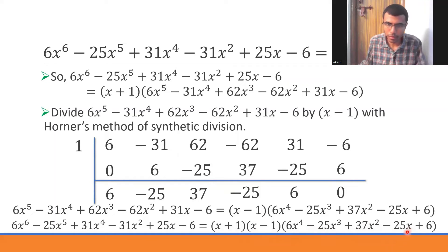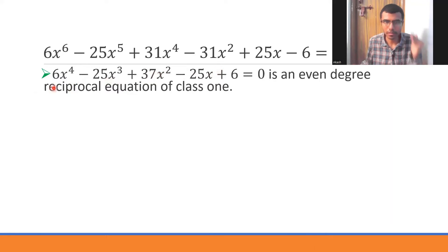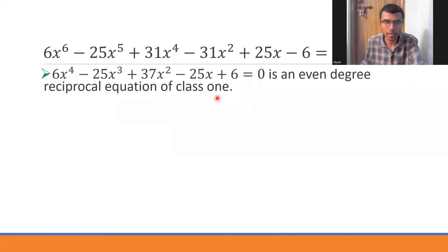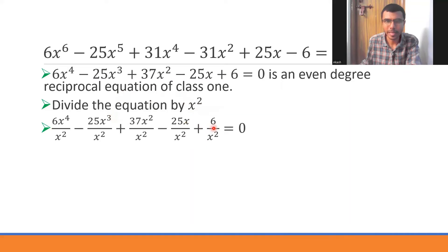Now we need roots of the 4th-degree polynomial 6x⁴ - 25x³ + 37x² - 25x + 6. Observe this is again a reciprocal equation — coefficient of x⁴ and constant both 6, coefficient of x³ and x both -25, and 37 in the middle. It is an even-degree reciprocal equation of Class 1 (leading coefficient is positive). The standard method is to divide the entire equation by x², giving: 6x² - 25x + 37 - 25/x + 6/x².